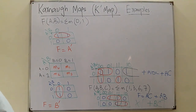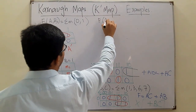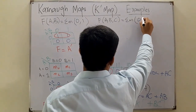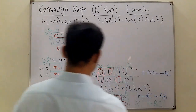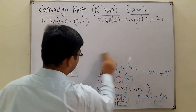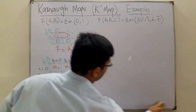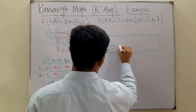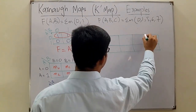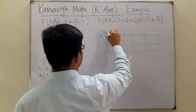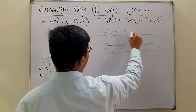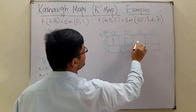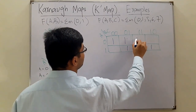Another three-variable example: f(A, B, C) equals summation of min terms 0, 1, 5, 6, and 7. Draw the K-map with A on one side and BC following Gray code. m0 is high, m1 is high, m2 and m3 are low, m5 is high, m6 is high, and m7 is high.